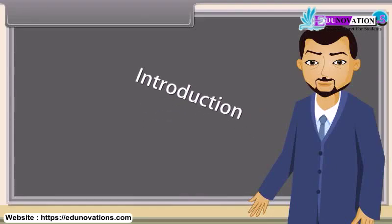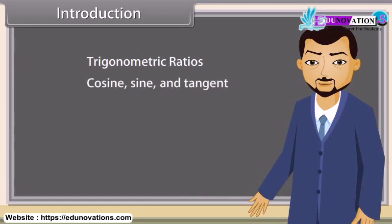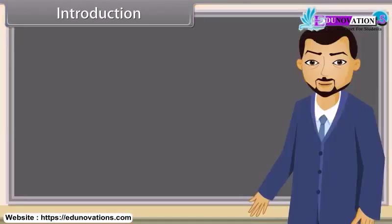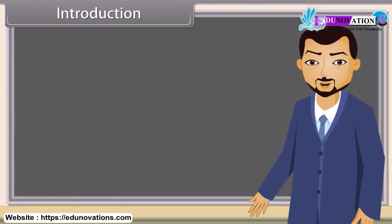You have probably met the trigonometric ratios cosine, sine and tangent in a right-angled triangle and have used them to calculate the sides and angles of those triangles. We define the cosine, sine and tangent as functions of all real numbers. These trigonometric functions are extremely important in science, engineering and mathematics.